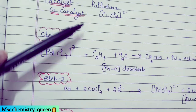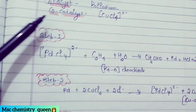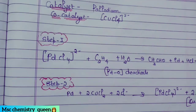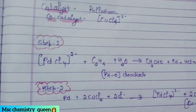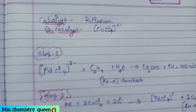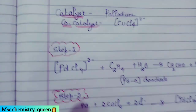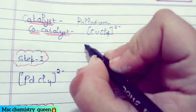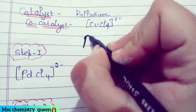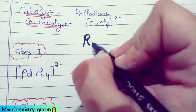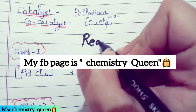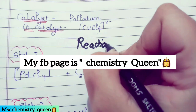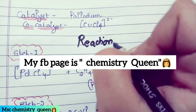Now let's see what happens in each step. The reaction proceeds in 3 steps. In step 1, palladium is in zero oxidation state, which deactivates it. In step 2, the co-catalyst activates it again. In step 3, we activate it again.